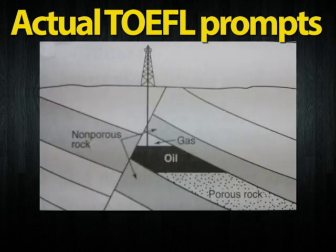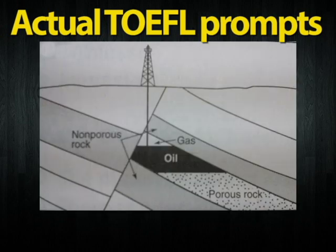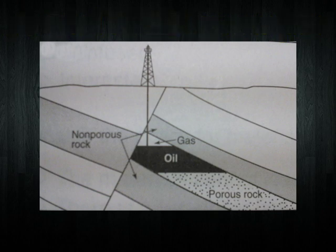Finally, I want to show you a fault trap. Fault traps are formed by the movement of rock along a fault line. This diagram represents a fracture in the earth that has shifted a non-porous rock formation on top of a porous formation. The reservoir rock, which is porous, has moved opposite a layer of non-porous rock. The non-porous rock prevents the oil from escaping. As in all traps, the oil is collected in the porous rock and trapped underground by the non-porous rock.